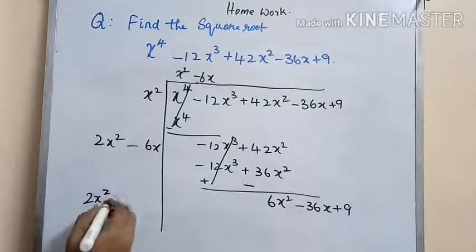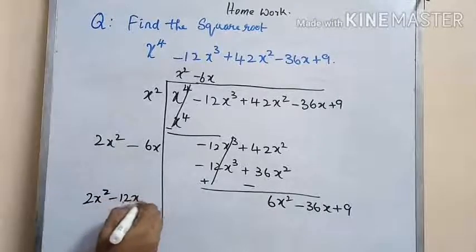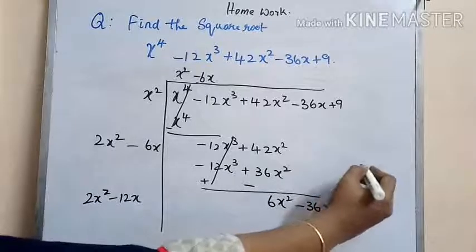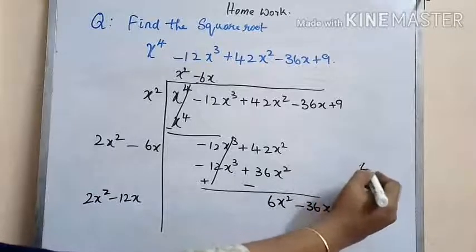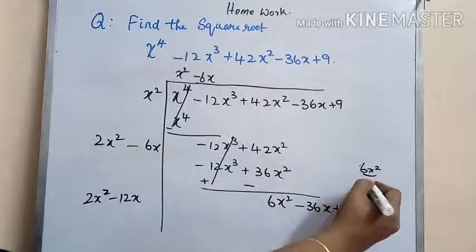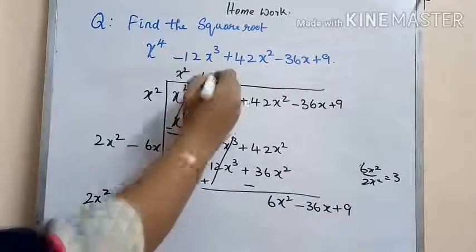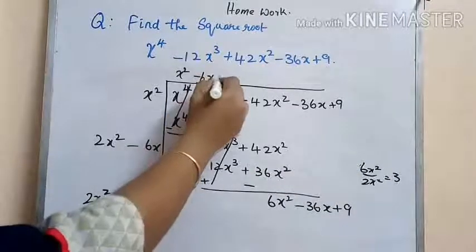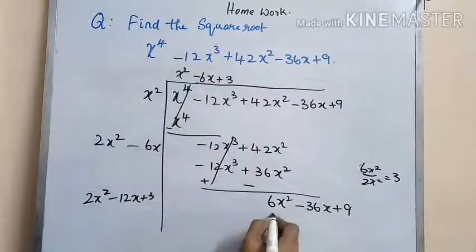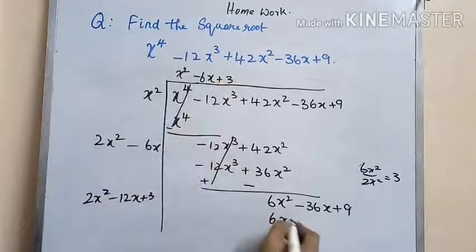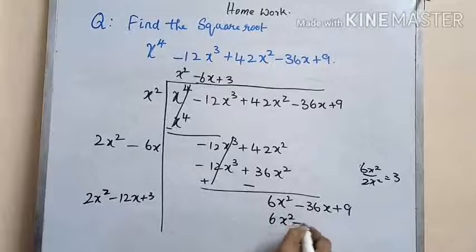Here we get 2x squared, and doubling minus 6x we get minus 12x. Dividing 6x squared by 2x squared we get 3, which should be written in the quotient part. So we get 6x squared minus 36x plus 9.